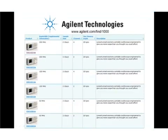Get the performance and features you expect in a big scope and the portability and low price you require in a small one. Get an Agilent 1000 series oscilloscope.